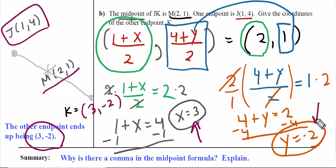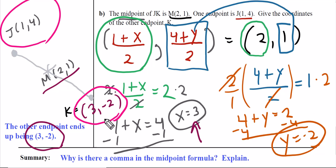If you want to check for yourself, you could take these two points and do the midpoint formula as we did in part a - you'll get this as an answer. For your summary: Why is there a comma in the midpoint formula? Explain.